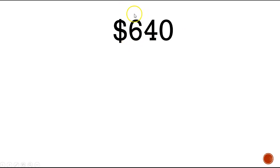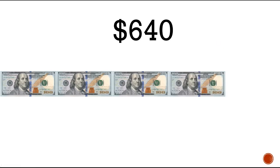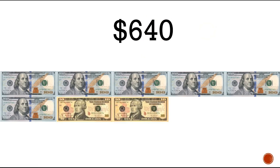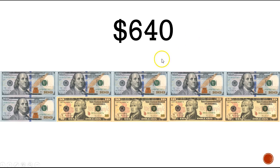Go ahead and make six hundred and forty dollars. Let's compare. There are six hundreds, so I need six one-hundred-dollar bills: 1, 2, 3, 4, 5, 6. Then there are four tens, so I need four ten-dollar bills: 1, 2, 3, 4. There are zero ones, so I do not need any one-dollar bills. There is my six hundred and forty dollars!